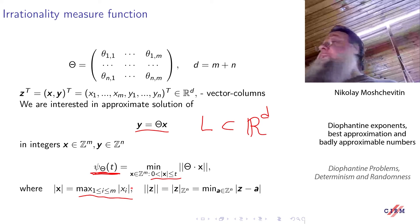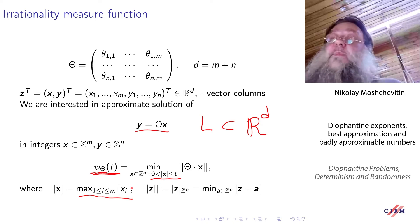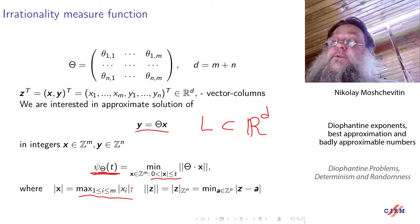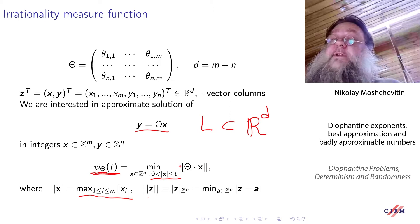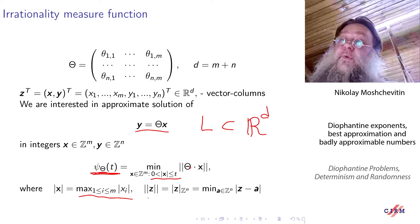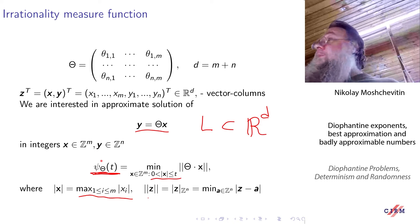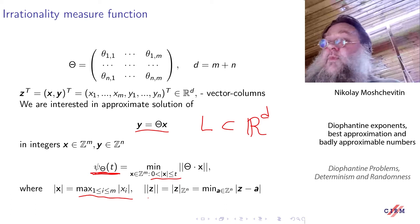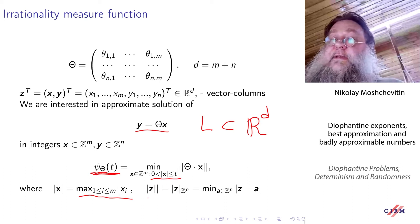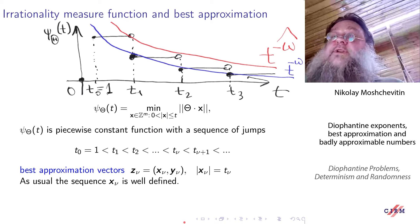Sometimes it will be much more convenient, and I will speak about one problem related to a different norm. And this stands for the distance to the nearest integer. So here we have distances to the nearest integer from points of this form. On my next slide, I will draw the graph of this irrationality measure function.